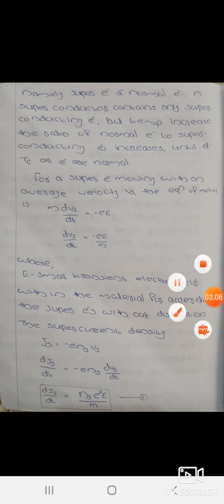Let's find the equation of motion. For super electrons: m·dvs/dt = −eE. A small transient electric field within the material accelerates the super electrons without dissipation. The super current density — the super electrons accelerate without dissipation.